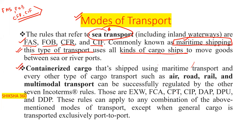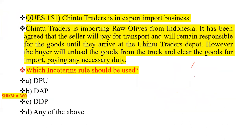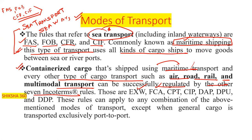Containerized cargo shipped using maritime transport, and every other type of cargo transport such as air, road, rail, and multimodal transport, can be regulated by the other seven Incoterms: EXW, FCA, CPT, CIP, DAP, DPU, and DDP. So the E category and D category are not used in maritime shipping — only FAS, FOB, CFR, and CIF are maritime-specific.